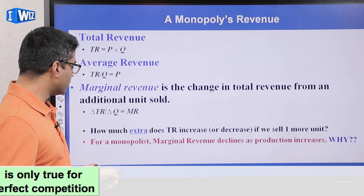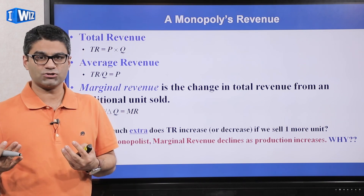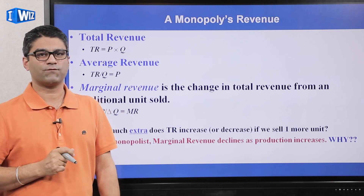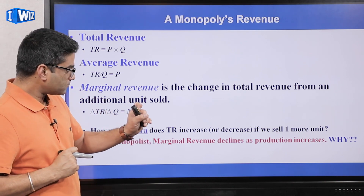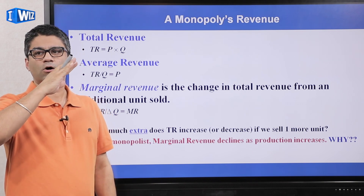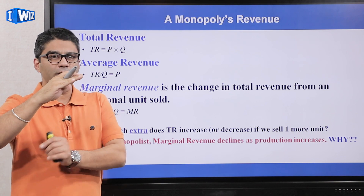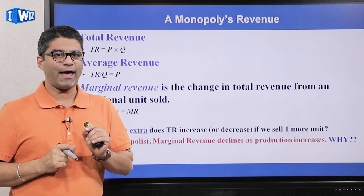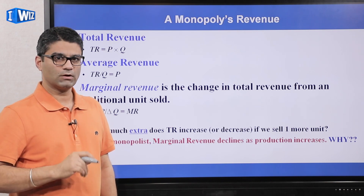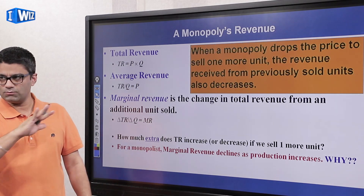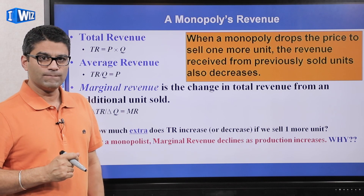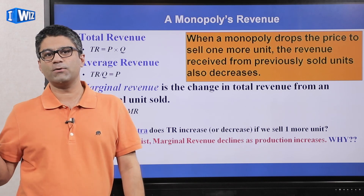For a monopolist, ask yourself: what happens to marginal revenue as they increase production? They work on a downward-sloping demand curve — pause the video and think about it. What happens to their extra revenue if they want to sell one more unit? When a monopoly drops the price to sell one more unit, they have to lower the price for every previous unit as well.